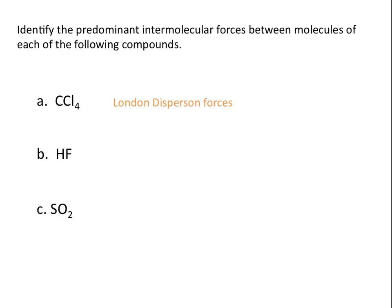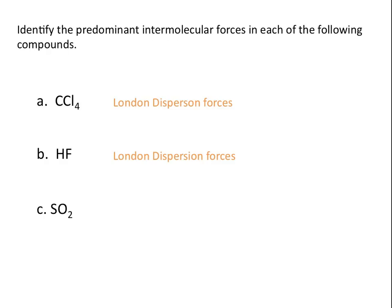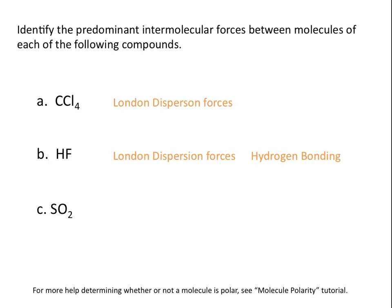B, hydrofluoric acid. If you drew out a molecule of hydrofluoric acid, you would see that the bond is polar and hydrofluoric acid is a polar molecule. Remember that both polar and nonpolar molecules have London dispersion forces. But because hydrofluoric acid is a polar molecule and contains fluorine, which is one of those three atoms involved in hydrogen bonds, hydrofluoric acid will also have hydrogen bonding between the molecules.